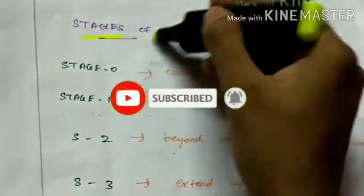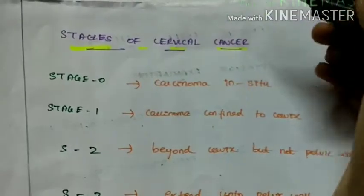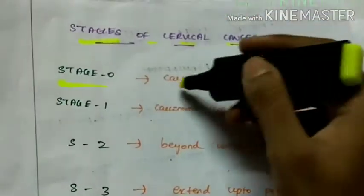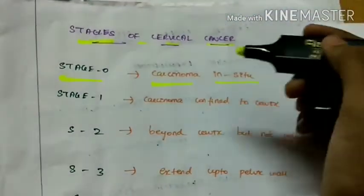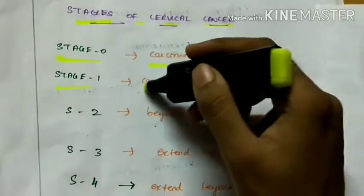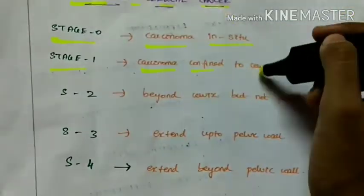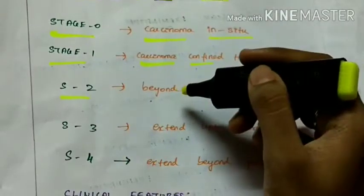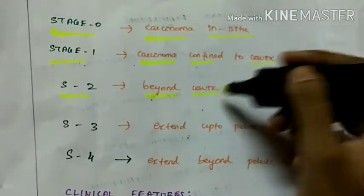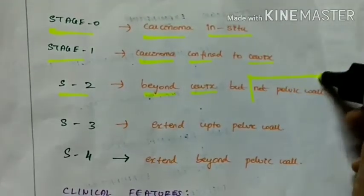The stages of cervical cancer. Stage 0 which is carcinoma in situ. Stage 1, the carcinoma is confined to the cervix. Stage 2, the carcinoma extends beyond the cervix but not the pelvic wall.